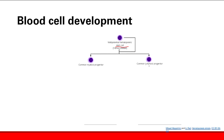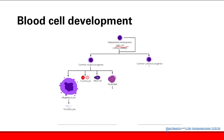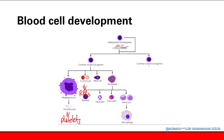We're going to focus on the common myeloid progenitors for a second and see what they end up becoming. These can become megakaryocytes, which become thrombocytes, which become platelets. Or you have erythrocytes — erythrocytes turn into red blood cells. And then we have mast cells and myoblasts. The myoblasts themselves turn into other cells in our immune system: basophils, neutrophils, eosinophils, and the monocytes become macrophages. So these all come from the common myeloid progenitors.